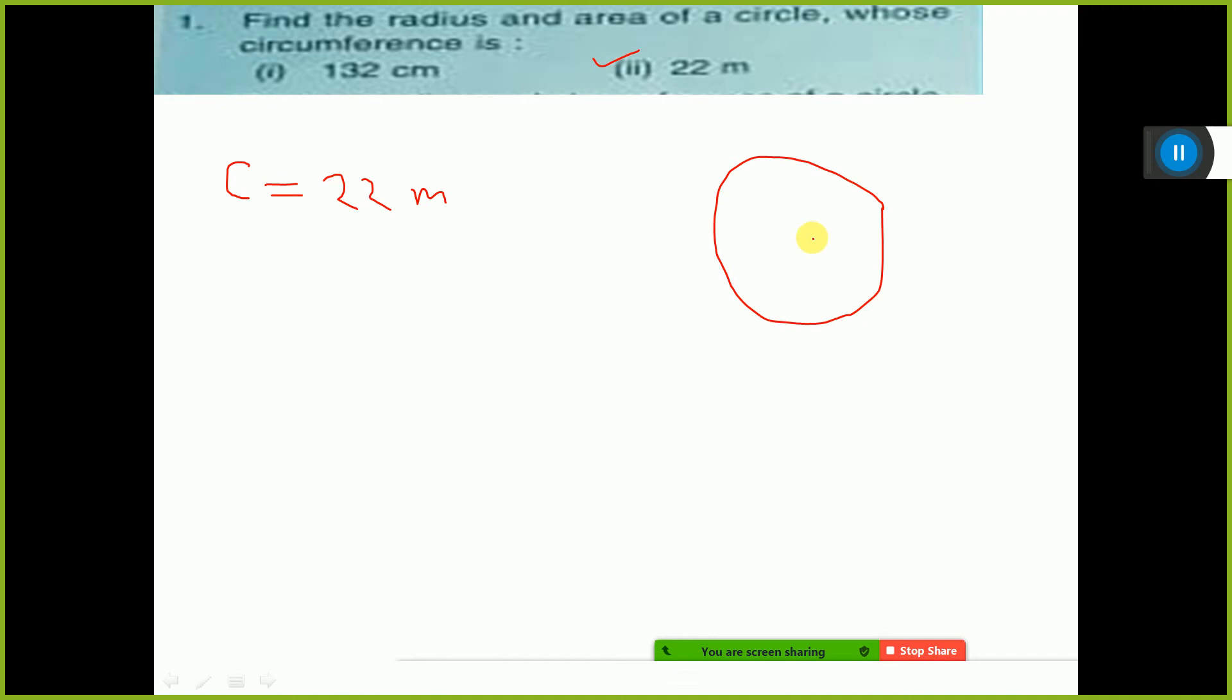So here you draw the radius, consider this is the radius. Then what is the formula of circumference? Tell me.